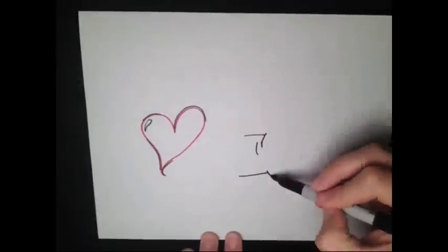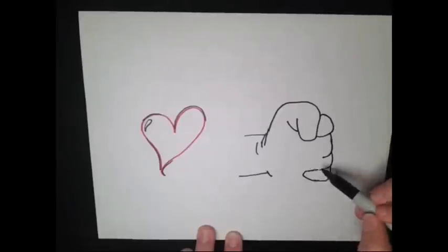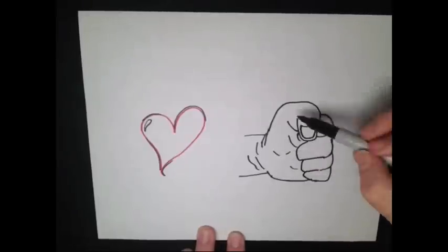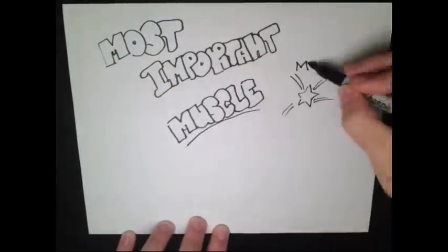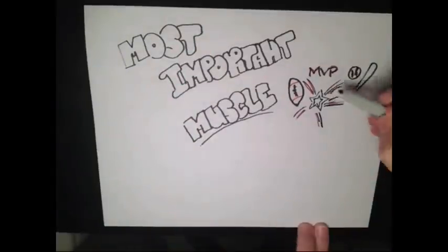The human heart is an organ located near the center of your chest and is about the size of your fist. This organ is considered one of the most important muscles in the human body, simply because it is responsible for every human's existence.